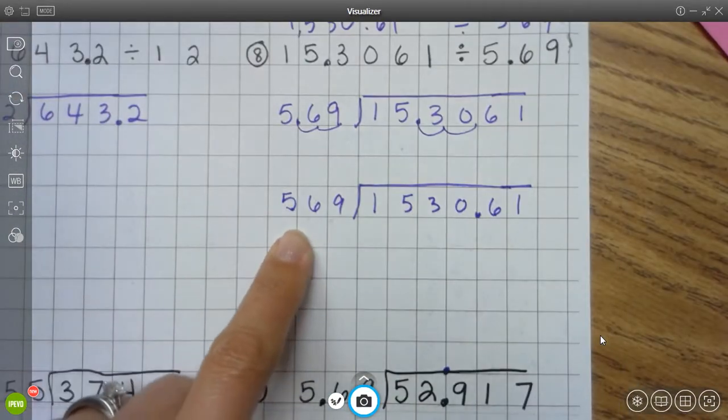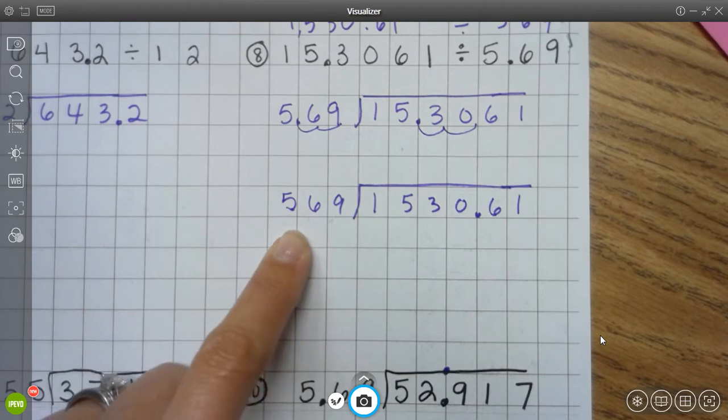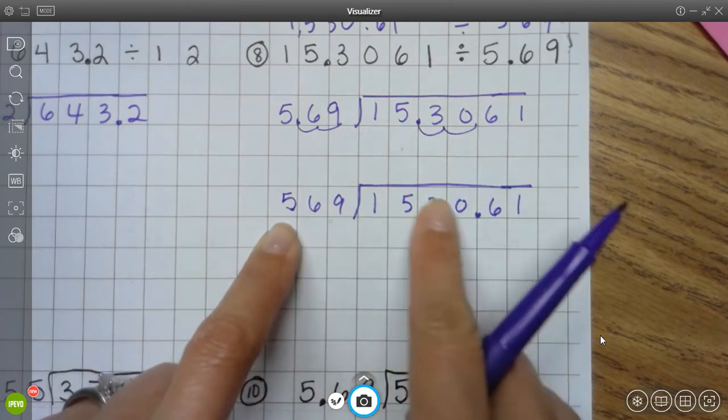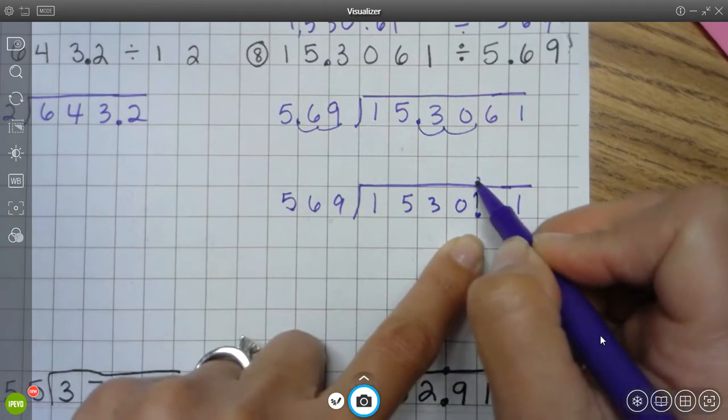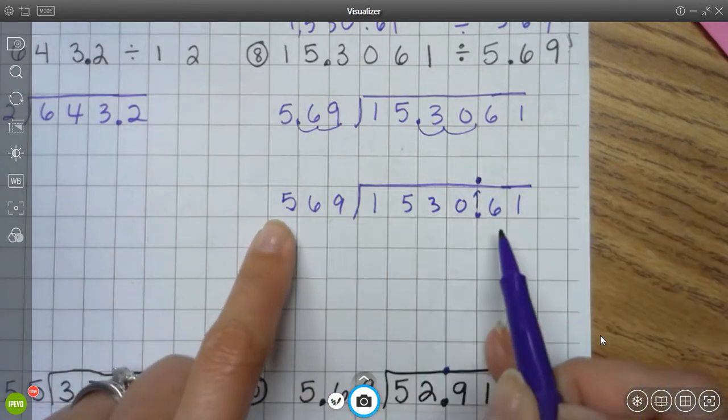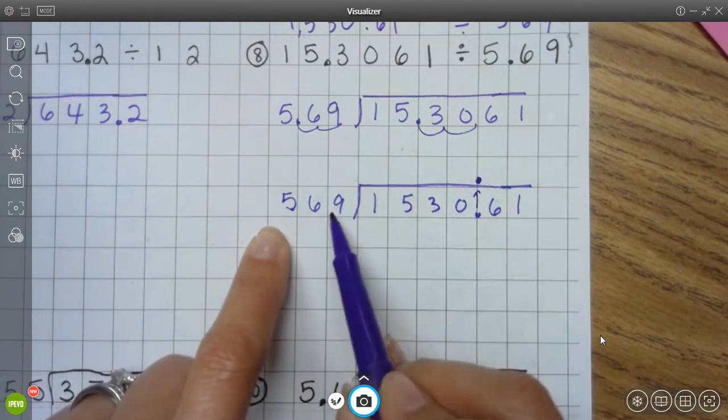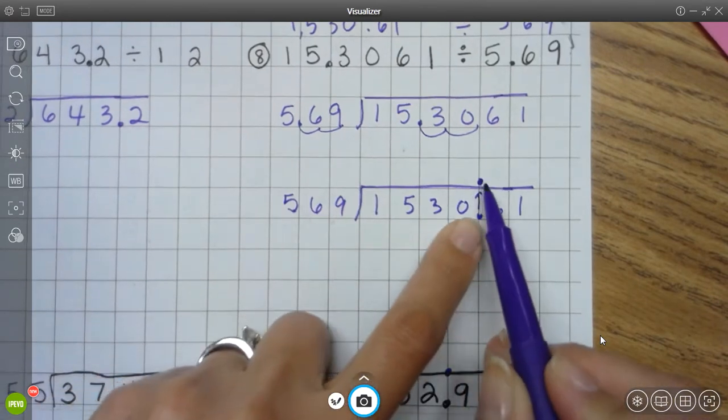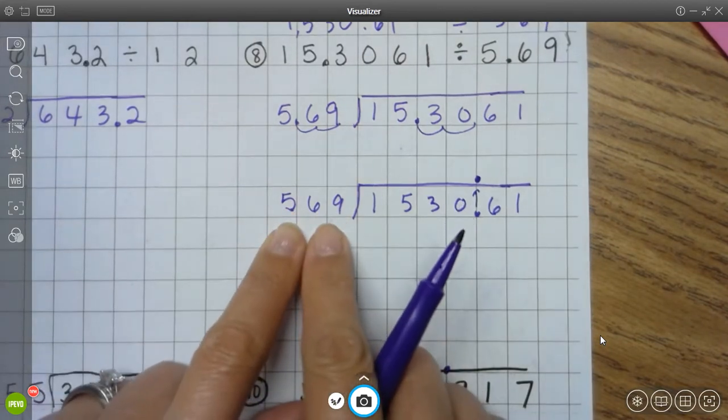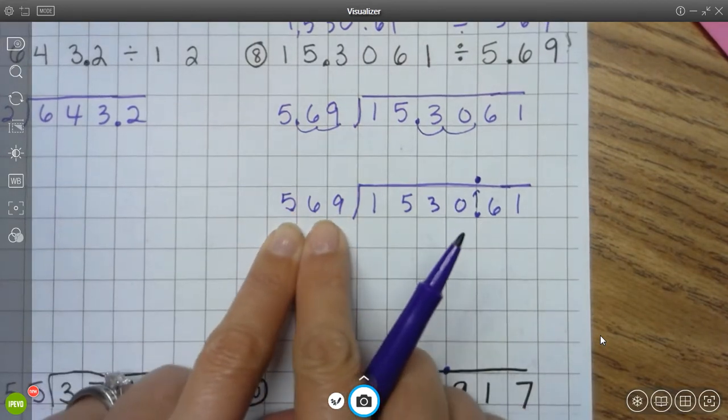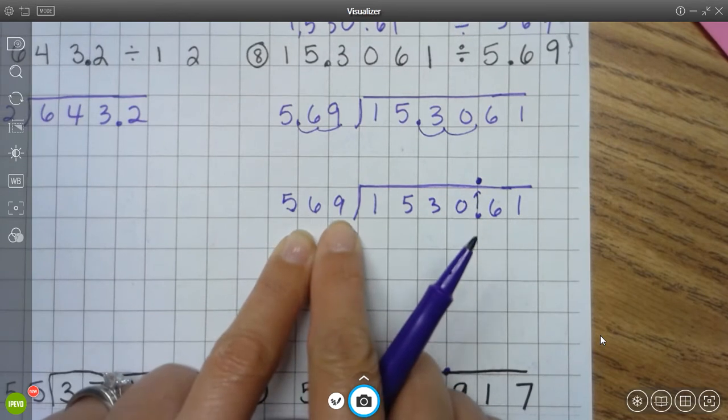Okay, so I definitely need to talk about or think about compatible numbers because 569 is a big number to divide into another big number. I need to put my decimal point on top of the roof, right? Since we got rid of the decimal here, this is a whole number. I just need to move this up and I don't have to worry about decimal points anymore. So I'm going to round this down to, or round this up to 600, right? 569 is really close to 600.